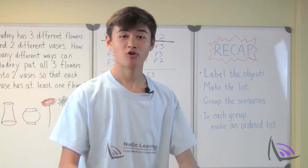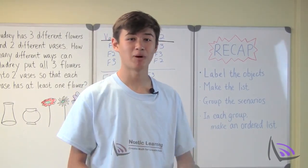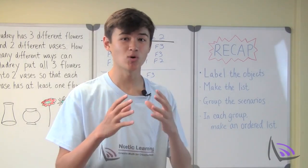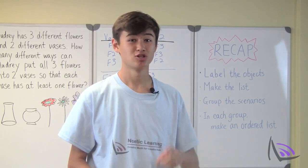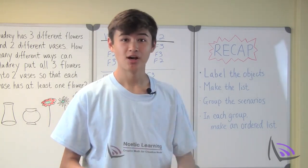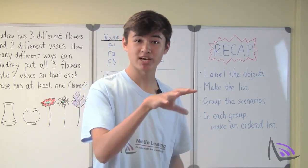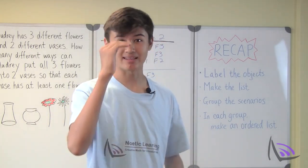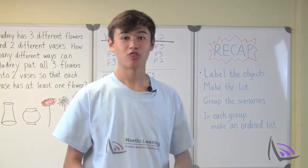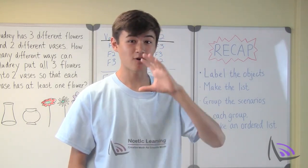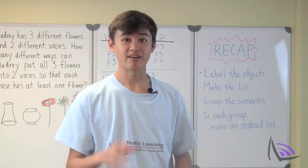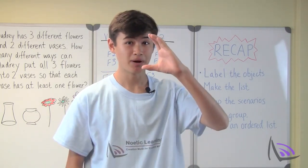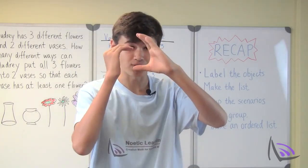Let's recap. For a question asking for possibilities or combinations, it's always best to make an organized list. First, label the objects. Second, make the list. Third, group the scenarios. And fourth, in each group, make an ordered list.